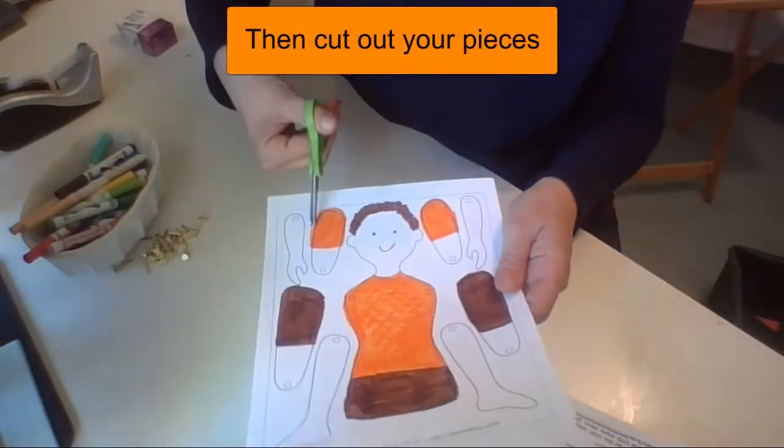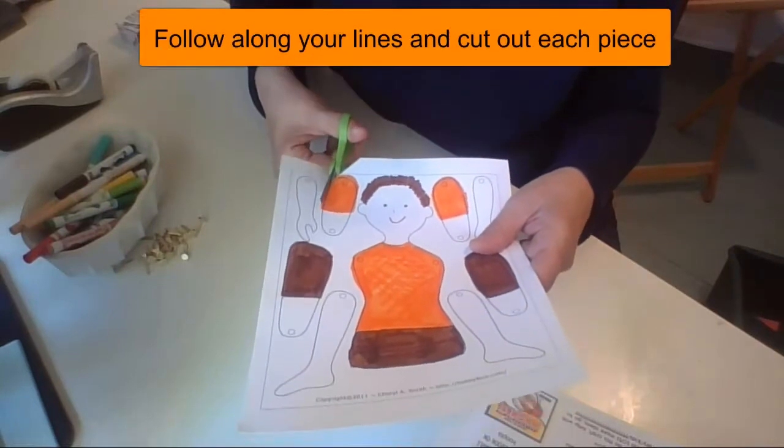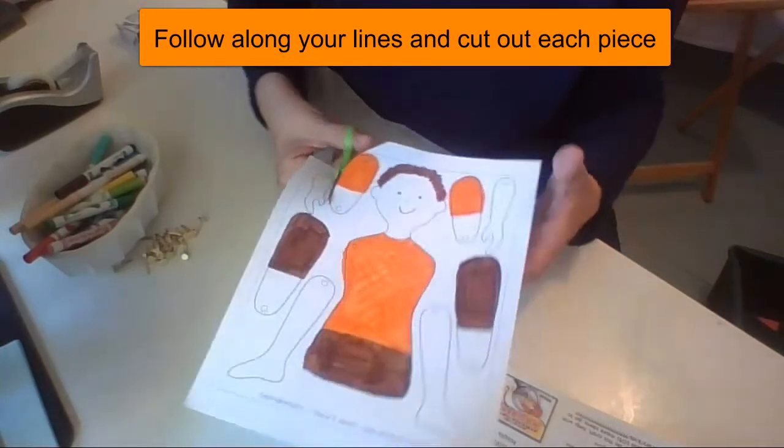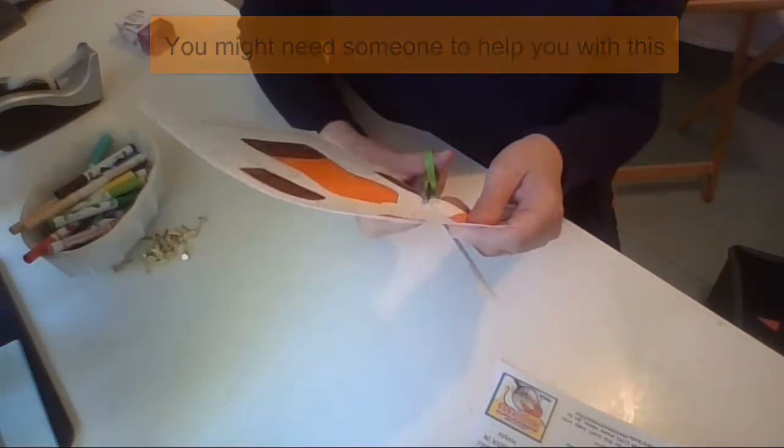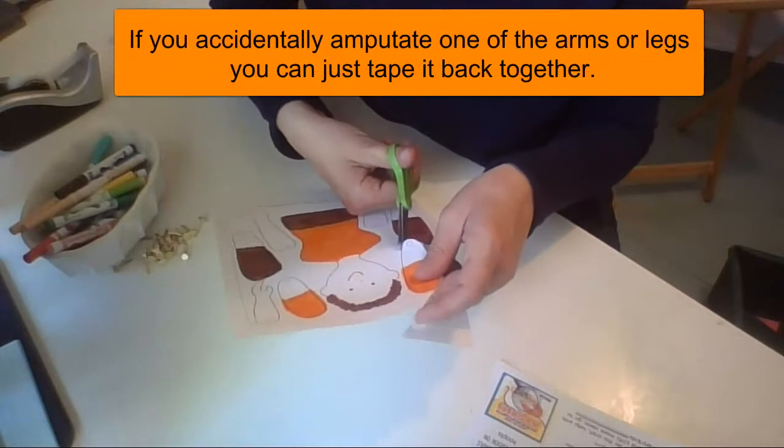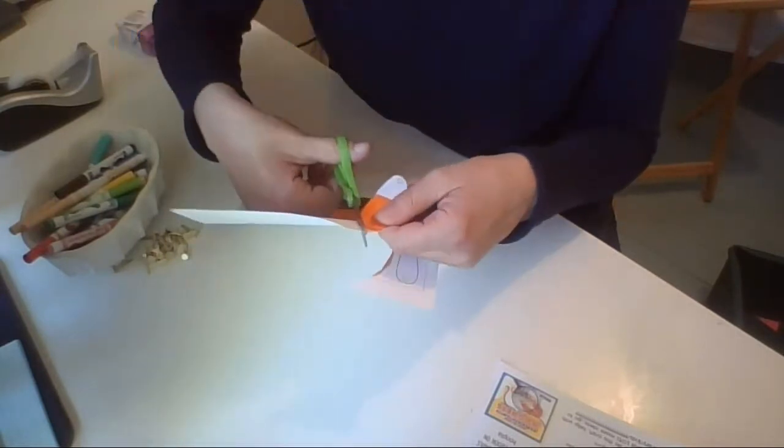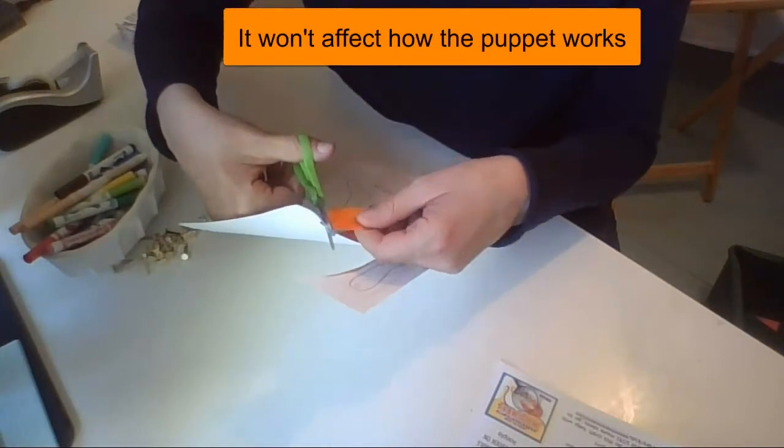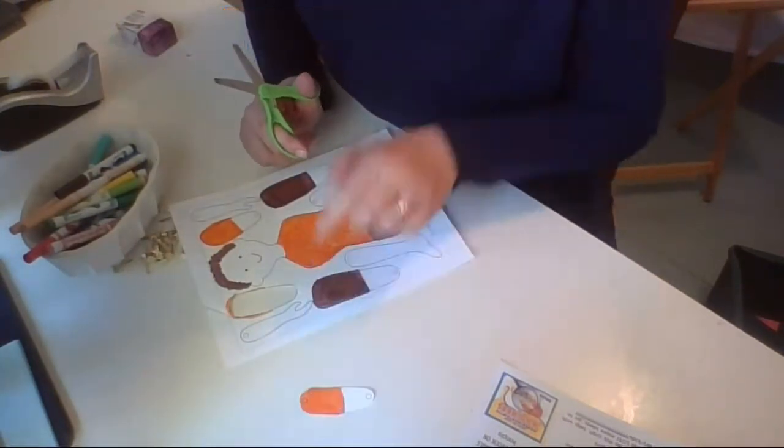So I'm going to follow along the lines and cut out each one. If you're not good at cutting, you might need someone older to help you with this part. Note if you accidentally amputate one of your appendages, one of the arms or legs, no worries, you can tape this back together. It's not going to affect how your puppet is made. So let's cut everything out.